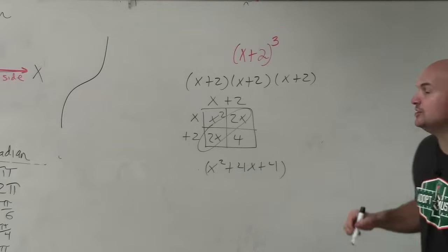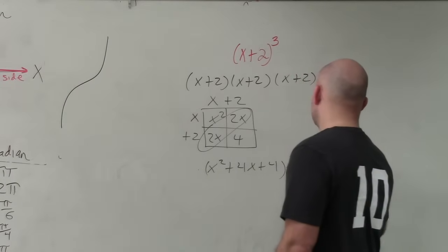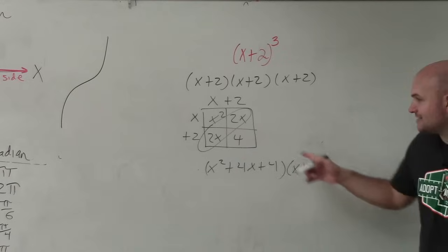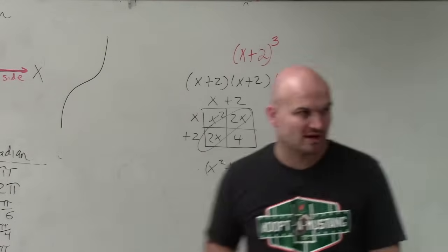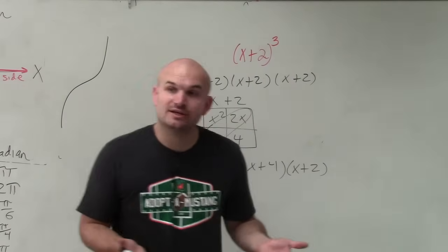However, that is still being multiplied by x plus 2. So now I need to multiply x plus 2 times x squared plus 4x plus 4. Well again, we can use the box method.